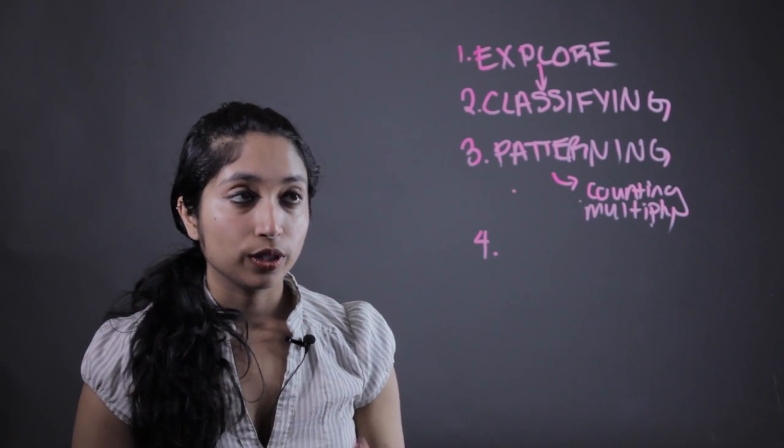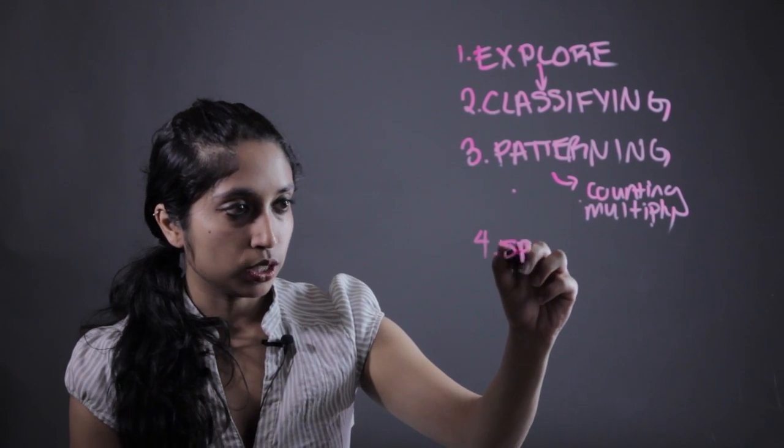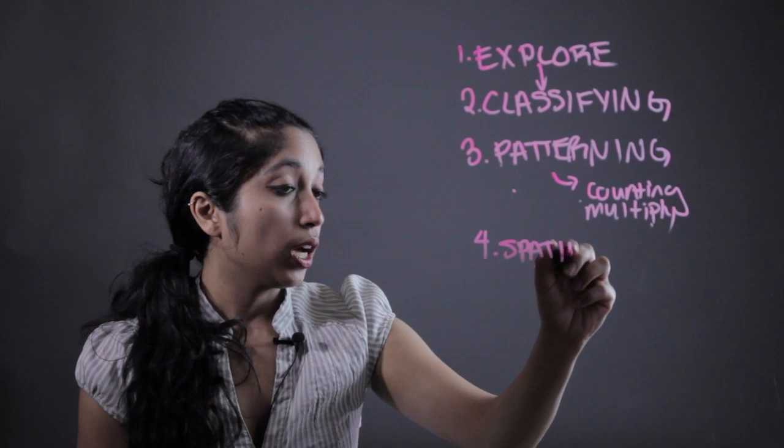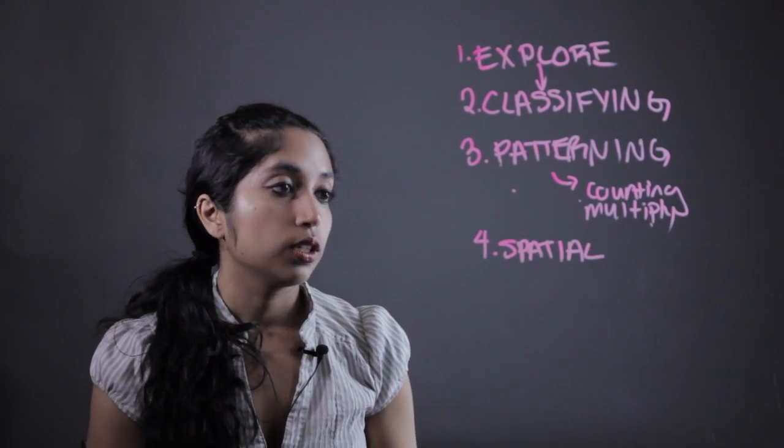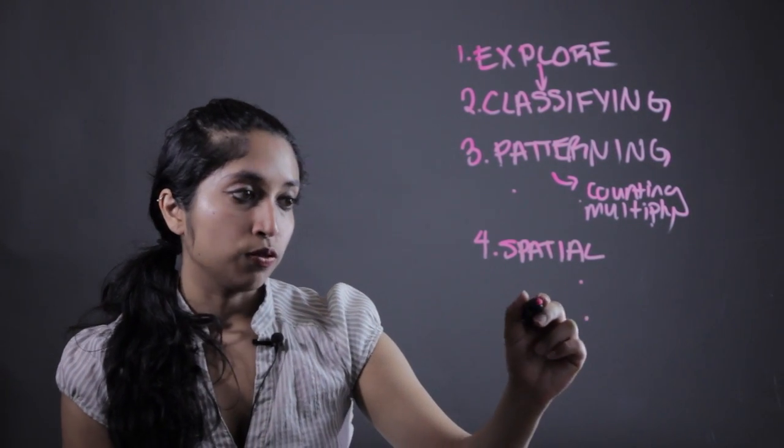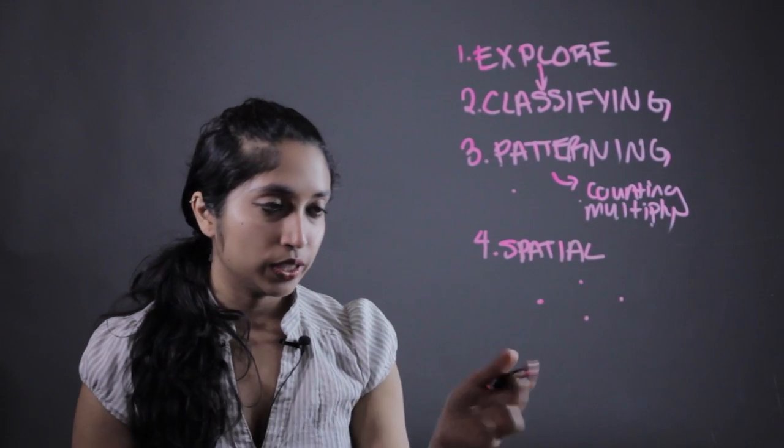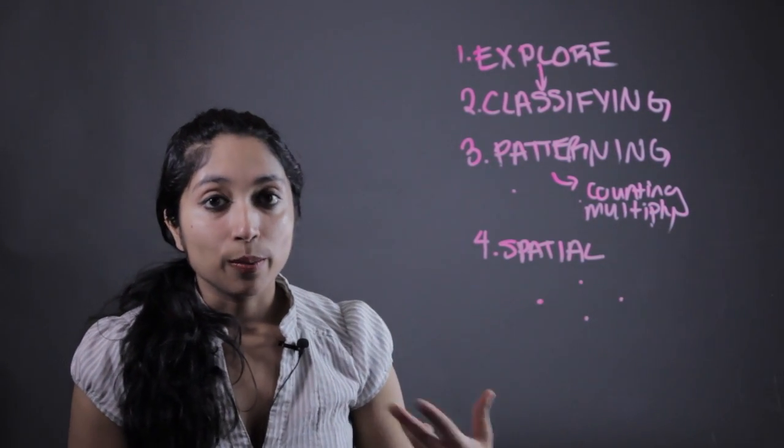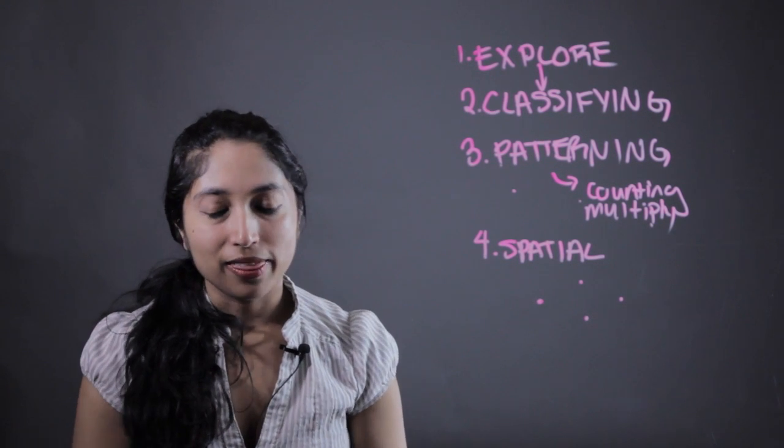The fourth thing that we're going to want to do is learn spatial relationships which is going to help them with geometry in the future. So kind of like what is above me, what is below me, what is in front of me, what is behind me and all of these different things that are going to help form the foundation for your kids later on in math.